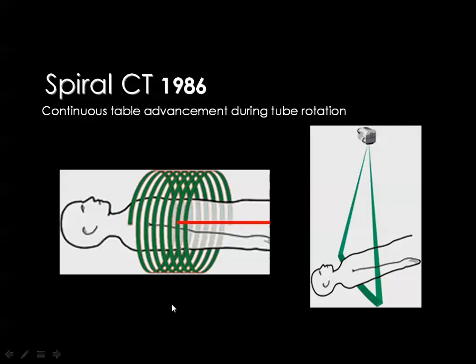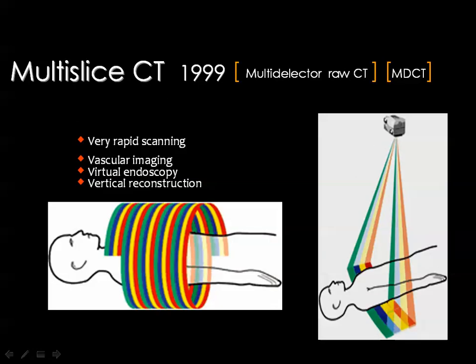If you place more than one detector in front of the X-ray tube — say four — then every tube rotation yields four sections. This is known as multi-slice CT because each rotation produces many slices, or multi-detector CT because of the multiple detectors. With four detectors, a CT chest scan can now be done in about three minutes or less. Since the invention of this machine in the late 1990s, the number of detectors has been tremendously increased.